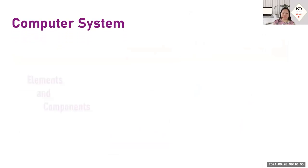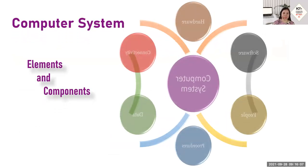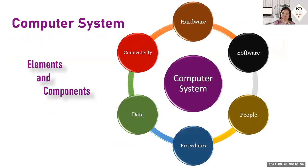The computer system has various elements and components. I would like you to be familiar with the elements of the computer system. It is composed of what we call hardware, software, people, procedure, data, and connectivity. There are actually more elements, but I just named six elements.